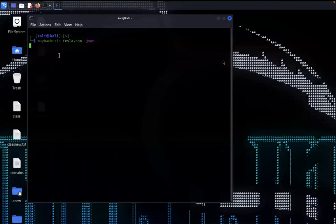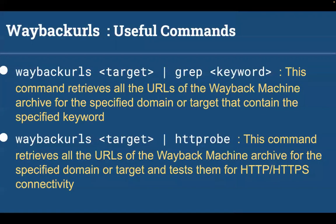Hit enter and it will display the result. The tool also has some cool features — like you can grab some keywords from it. If you want to find some redirect parameters, login parameters, or any other parameters, you can use the grab command. And if you want to filter your results by HTTP or HTTPS connectivity, you can use HTTP probe as well. HTTP probe is another script you need to install, which you can find on the GitHub repo.